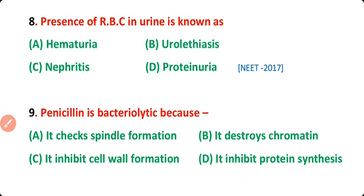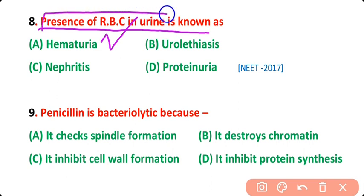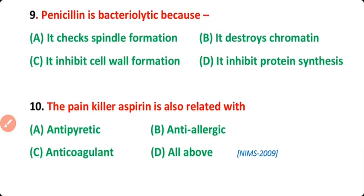Question number 8: Presence of red blood cells in the urine is known as hematuria, urolithiasis, nephritis, or proteinuria? The correct answer is option A. Hematuria is the presence of red blood cells in the urine.